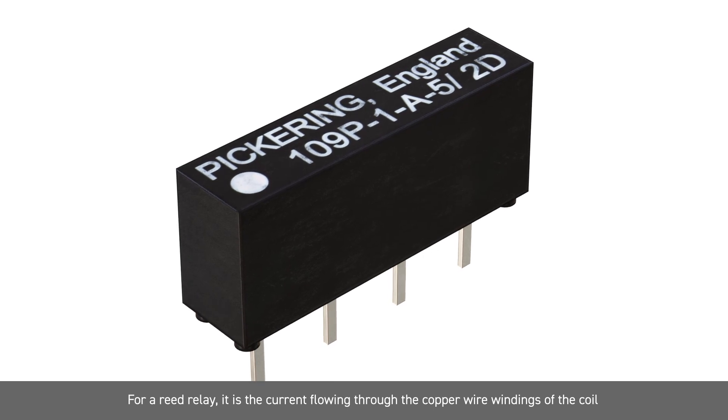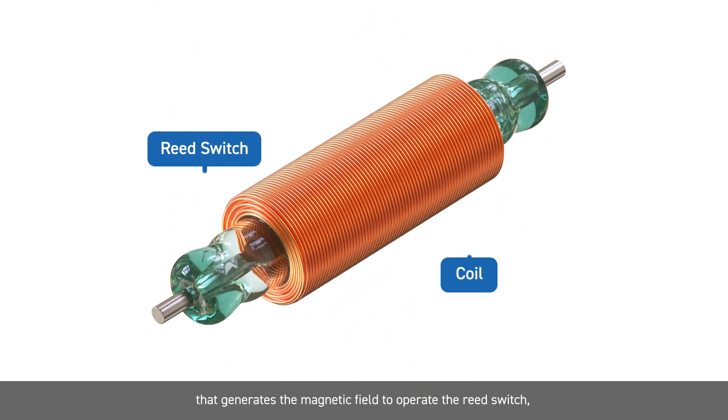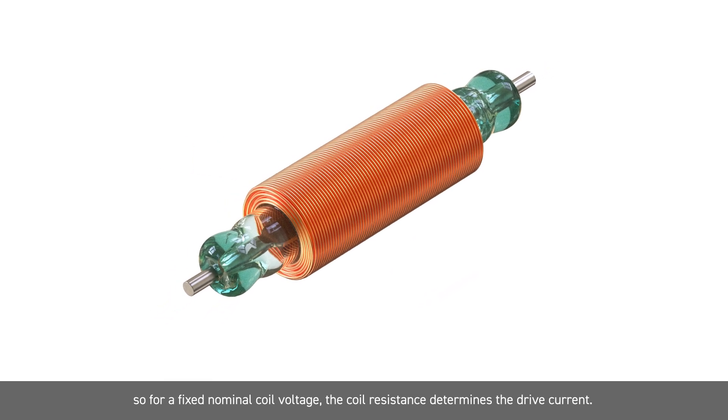For a reed relay, it is the current flowing through the copper wire windings of the coil that generate the magnetic field to operate the reed switch. So for a fixed nominal coil voltage, the coil resistance determines the drive current.